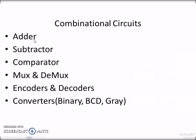Examples of combinational circuits include: adder circuits for binary addition, subtractor circuits for binary subtraction, and comparators. These are arithmetic and logic function circuits. Also, multiplexers, which select one input from many, and demultiplexers, which provide multiple outputs. Encoders, decoders, and various converters such as binary to Gray, binary to BCD, and BCD to Gray are also combinational circuits.